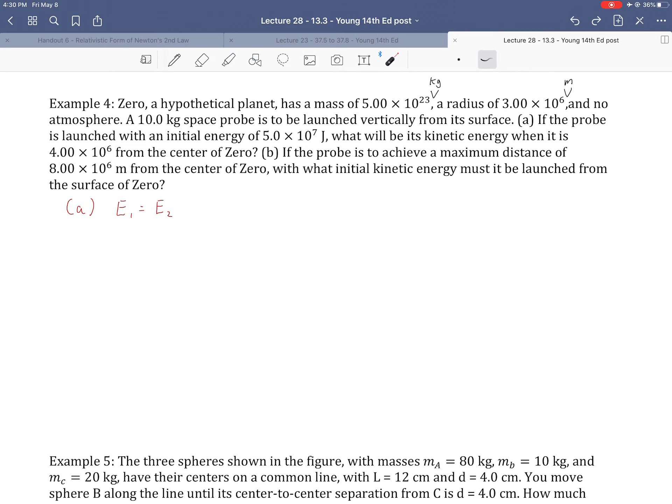If the probe is to achieve a maximum distance of 8 million meters from the center of Zero, with what initial kinetic energy must it be launched from the surface of Zero? So here at 4, it's asking for how much kinetic energy is left over, because we started with 50 million. How much is left over when it's at this height? If we've got a negative value, then it's a bad question because it's kind of a trick question. But that's not the way this problem works out. It's a positive value. There is leftover kinetic energy.